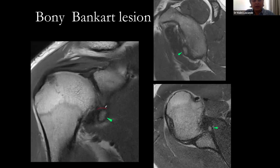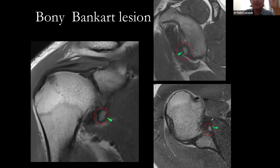Non-fat-saturated images like T1 or PD show the bony Bankart osseous fragment very well. T2 fat sat produces a lot of edema that confuses things, so non-fat-sat sequences — T1 or PD — are preferred to show the osseous fragment, assess its dimensions, and determine whether it is significantly displaced.